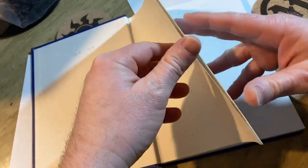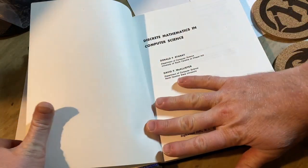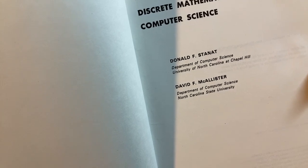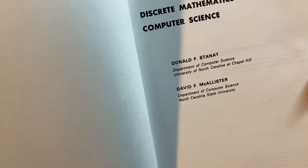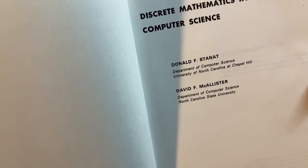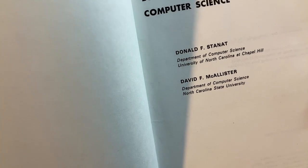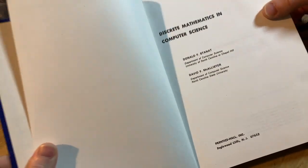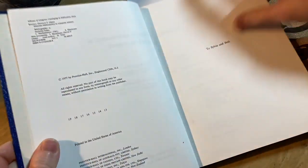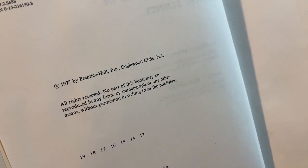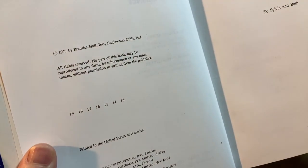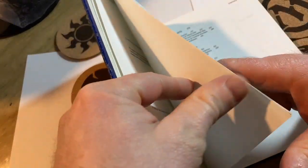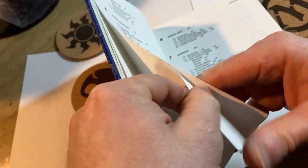Discrete Mathematics in Computer Science. Donald F. Stannat, Department of Computer Science, University of North Carolina at Chapel Hill, and David McAllister, Department of Computer Science, North Carolina State University. 1977 by Prentice Hall. Pretty old book. 1977 was a very long time ago.